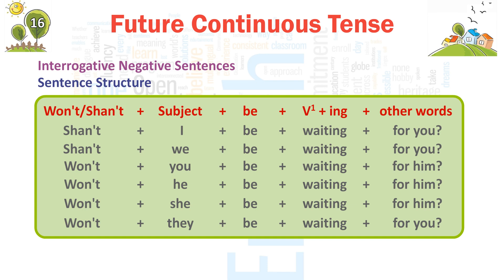Won't + he + be + waiting + for him? → 'Won't he be waiting for him?' Won't + she + be + waiting + for him? → 'Won't she be waiting for him?' Won't + they + be + waiting + for you? → 'Won't they be waiting for you?' Thank you.